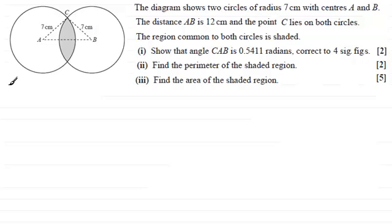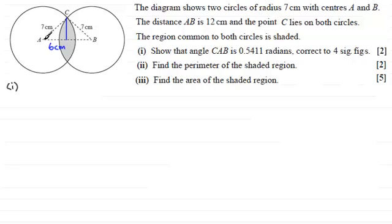For part one, we need to show that angle CAB is 0.5411 radians correct to four significant figures. Looking at this triangle, if we bring a vertical line down through it — since AB is 12 centimetres and it's an isosceles triangle — this line cuts AB in half, giving six centimetres on each side. This creates a right-angle triangle with the adjacent side and the hypotenuse.